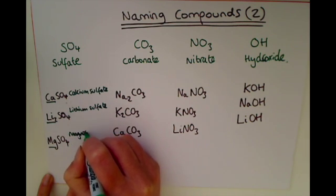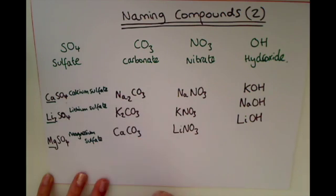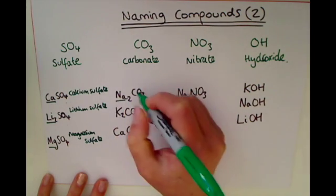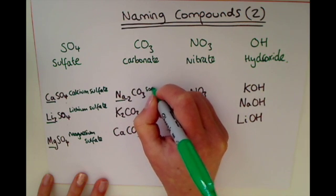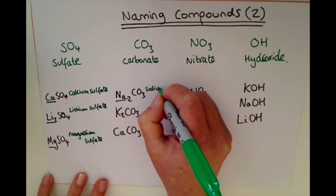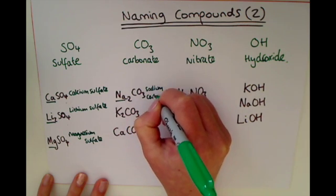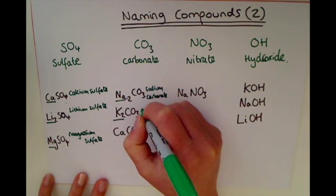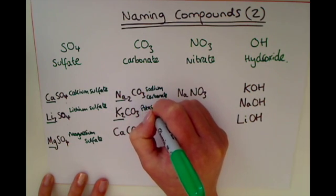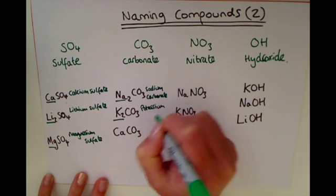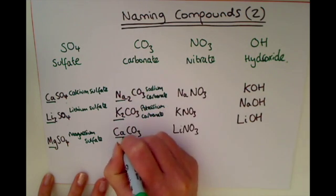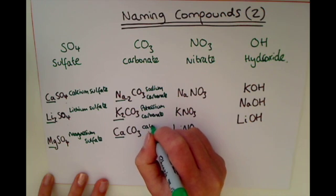For the carbonates: Na gives us sodium carbonate. K2CO3 — that's potassium carbonate. And CaCO3 — that's calcium carbonate.